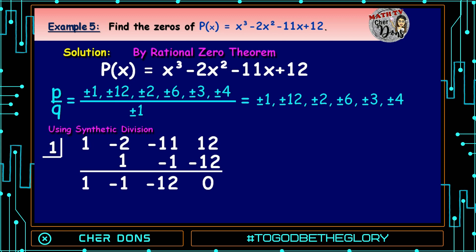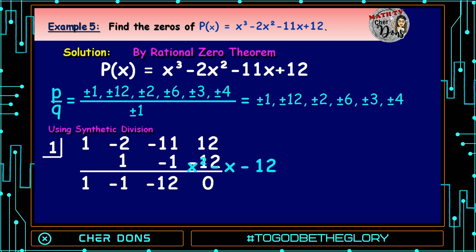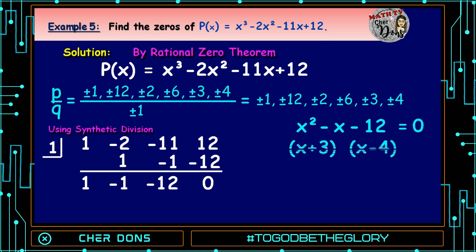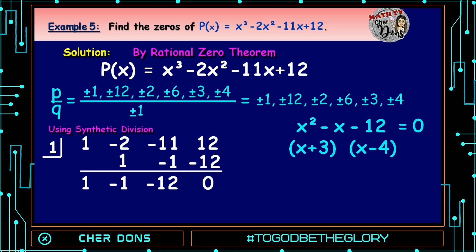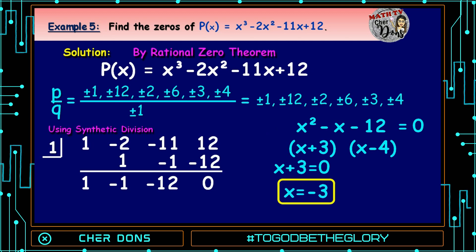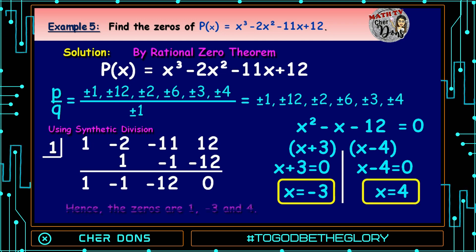Now let us write the depressed equation: x squared minus x minus 12. We solve for the other zeros by factoring. x squared minus x minus 12 equals zero factors as x plus 3 times x minus 4, since x times x is x squared, 3 times negative 4 is negative 12, and 3 plus negative 4 is negative 1. Setting each factor to zero: x plus 3 equals zero gives x equals negative 3, and x minus 4 equals zero gives x equals 4. Hence, the zeros are 1, negative 3, and 4.